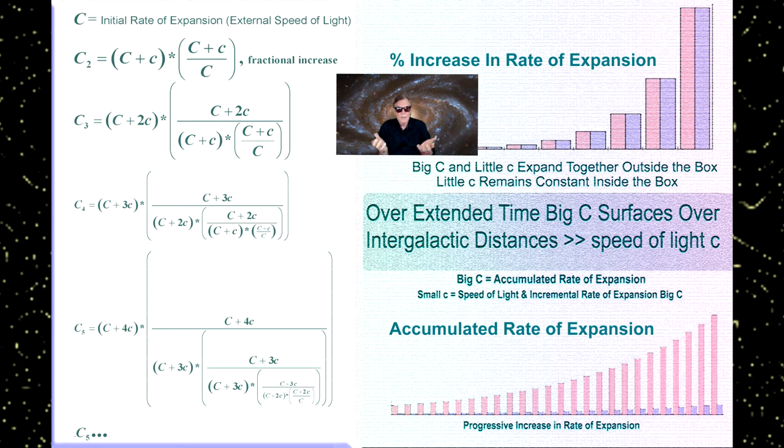So these equations describe the incremental increase in big C. If we arbitrarily assign the value of big C as a starting point, C will increase each second by this value of little c. However, since little c is measured outside the box, it will increase by the same proportion as the size of the universe—the actual size of the universe and value of big C grows at an ever-increasing rate.